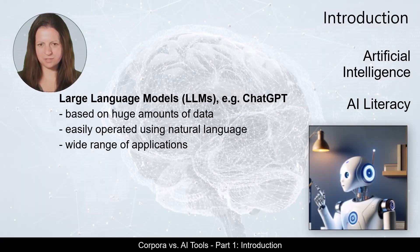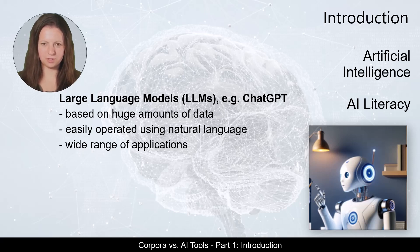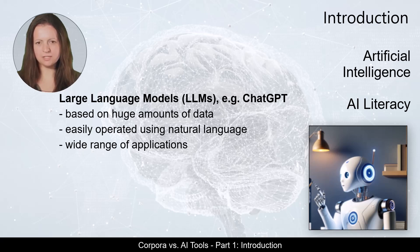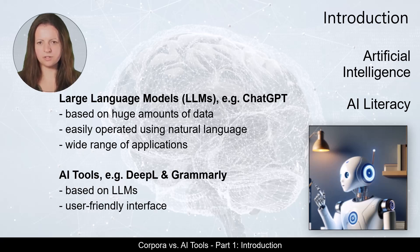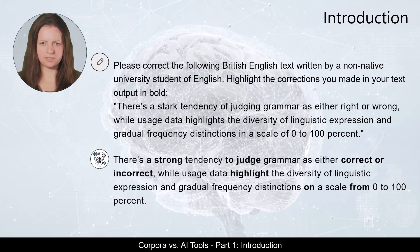Large language models are based on huge amounts of data as well, but can easily be operated through chatbots like ChatGPT by using natural language. They offer a wide range of applications from brainstorming and structuring arguments to the formal final editing of publications. One function that many of you have probably already used is the correction of your own texts in English, especially if this is not your first language. DeepLWrite and Grammarly are AI tools that are also based on large language models but have a very user-friendly interface — you simply type or paste your text and corrections are automatically inserted.